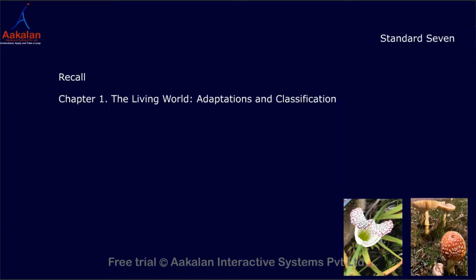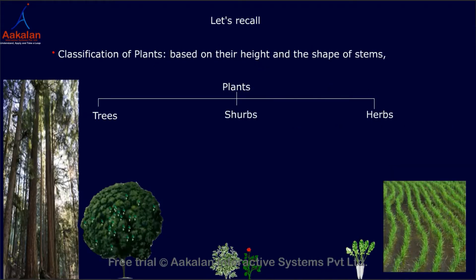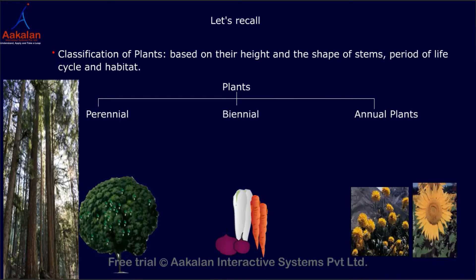The Living World: Adaptations and Classification. Let's Recall — Classification of living things. Plants are classified based on their height, the shape of stems, and the period of their life cycle and habitat.